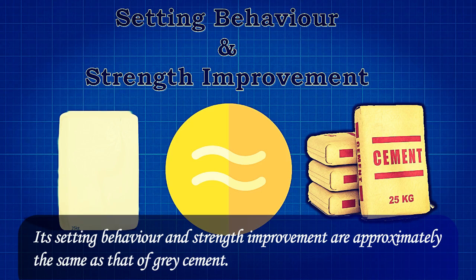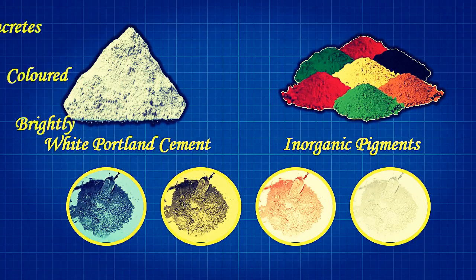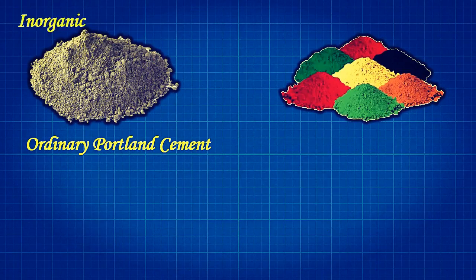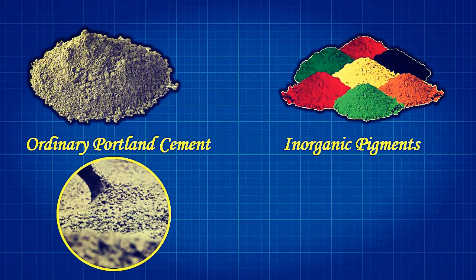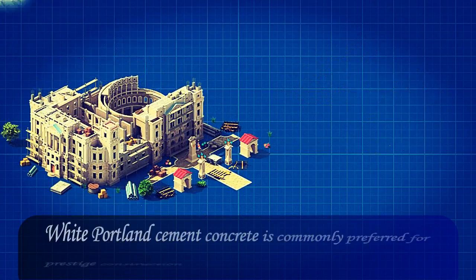Its setting behavior and strength improvement are approximately the same as that of gray cement. White Portland cement is also used in combination with inorganic pigments, and can be used to produce brightly colored concretes and mortars.